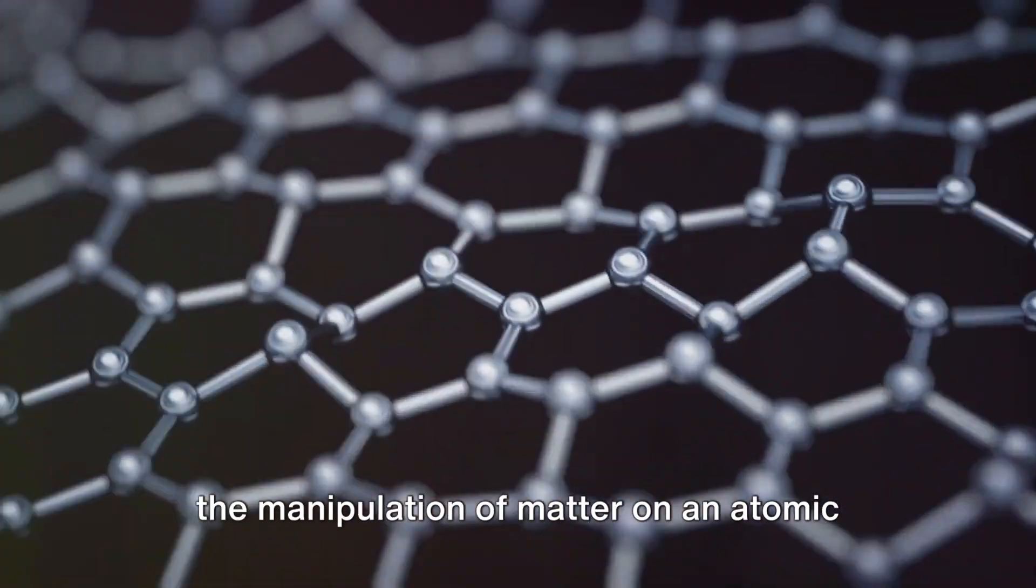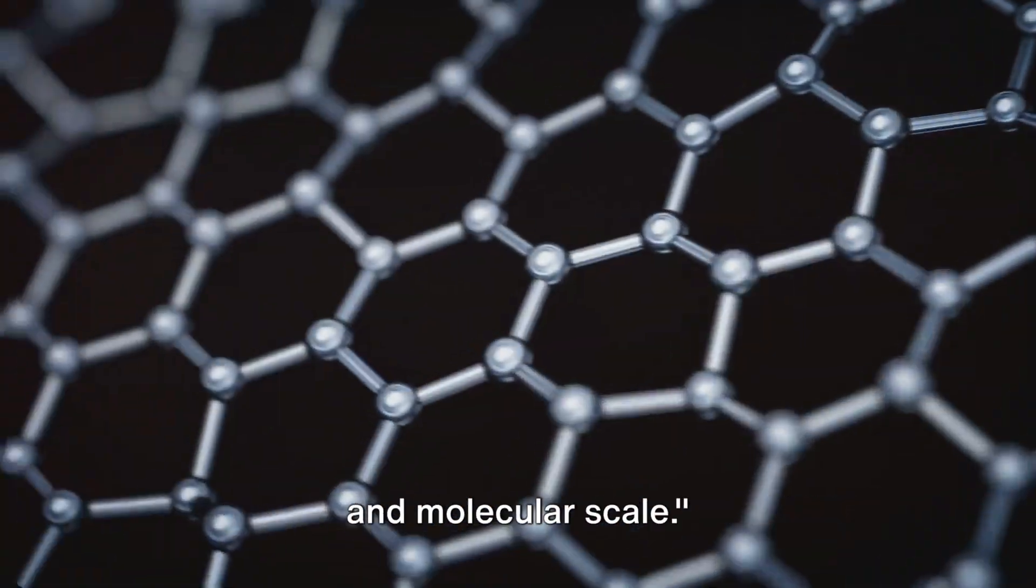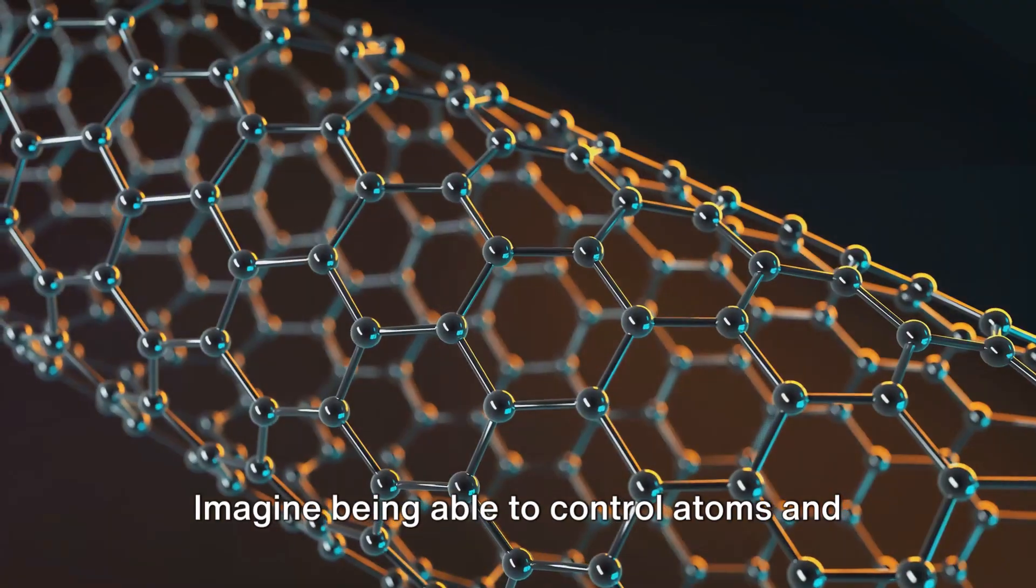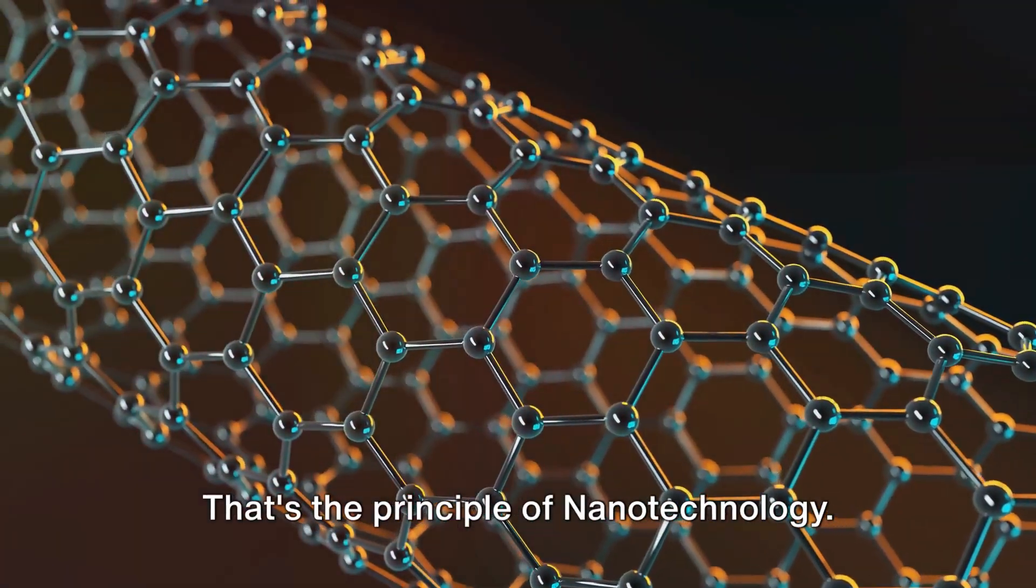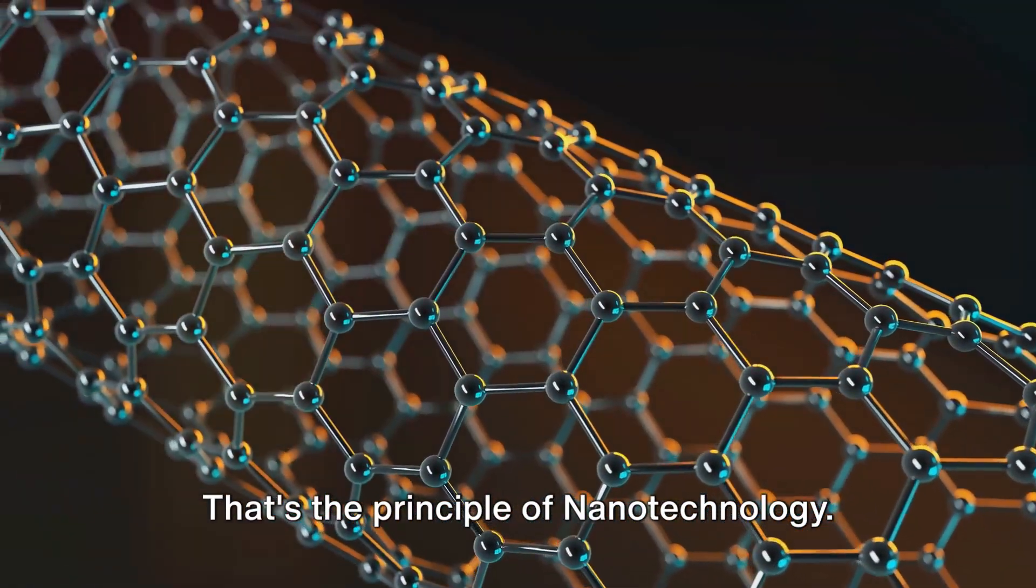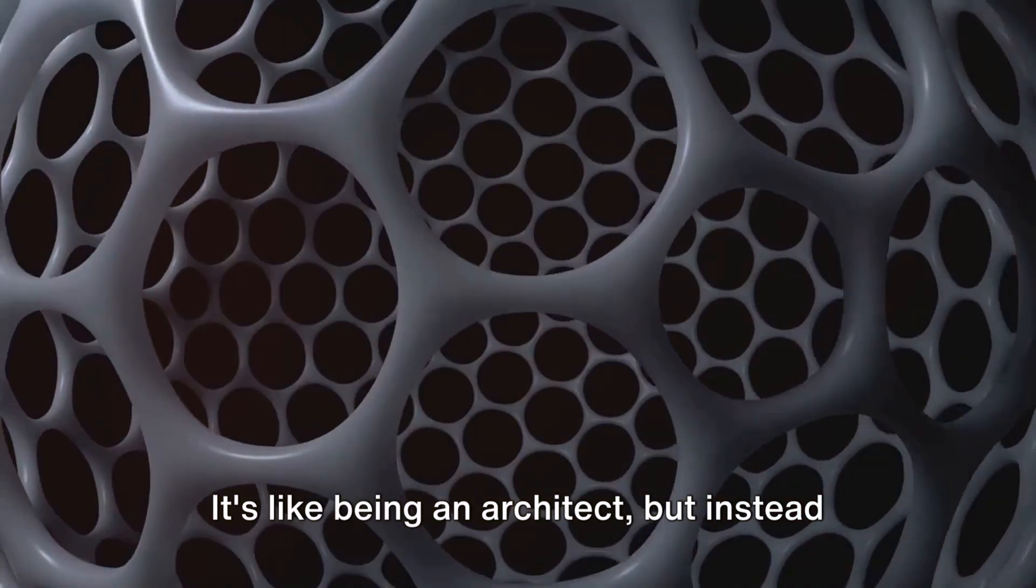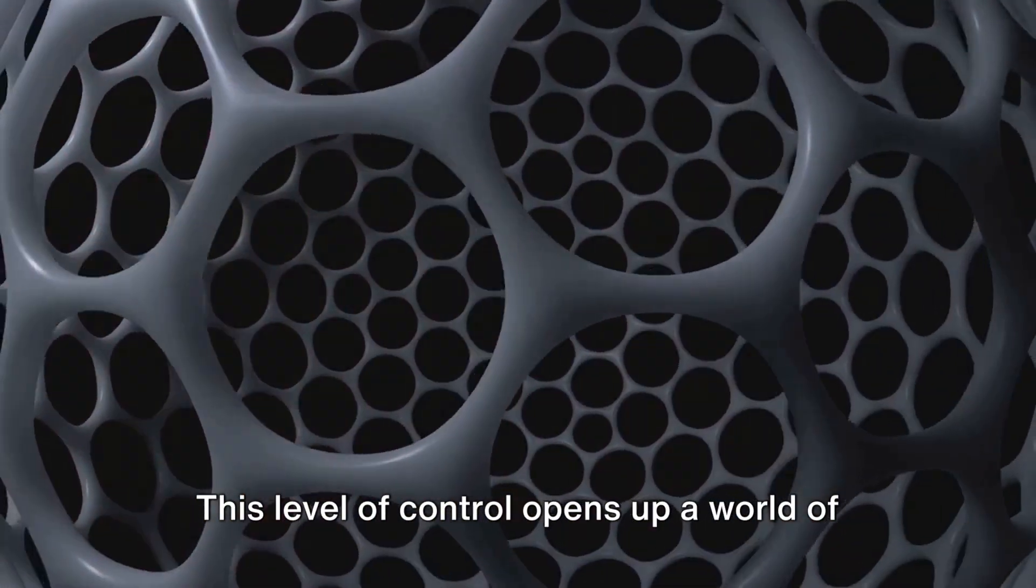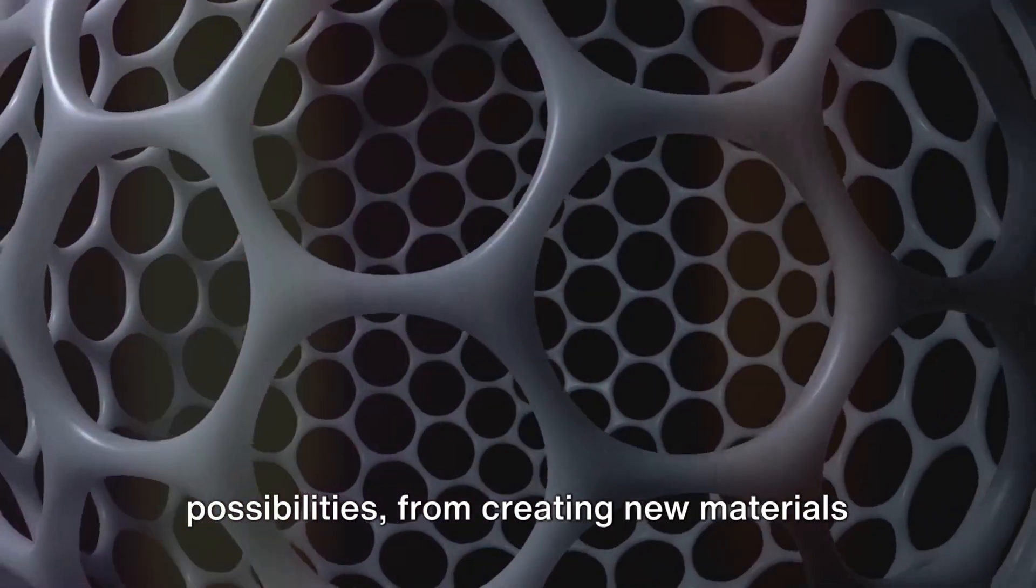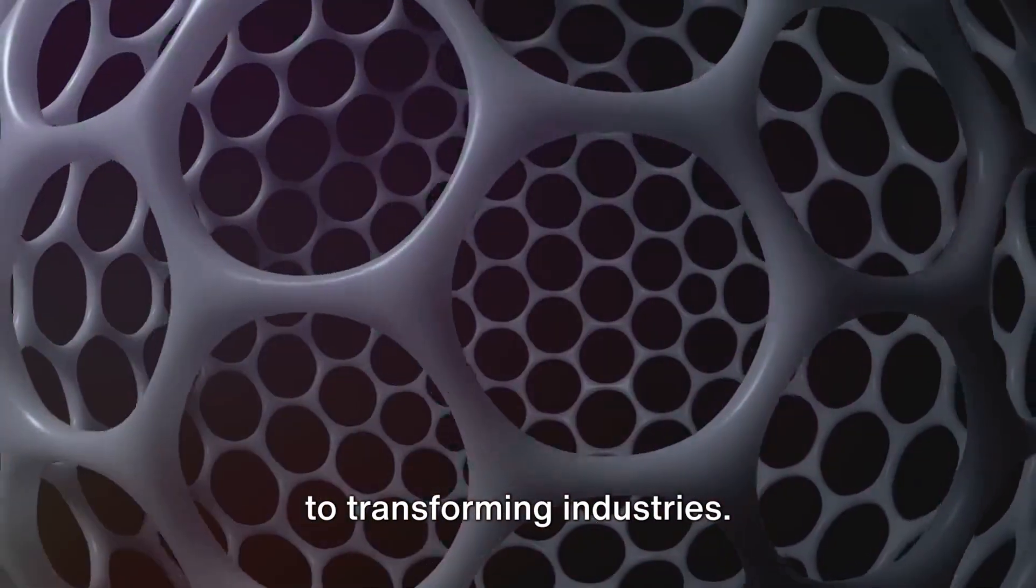At number 2 we have nanotechnology, the manipulation of matter on an atomic and molecular scale. Imagine being able to control atoms and molecules, rearranging them to our will. It's like being an architect but instead of designing buildings, you're designing molecules. This level of control opens up a world of possibilities from creating new materials to transforming industries.